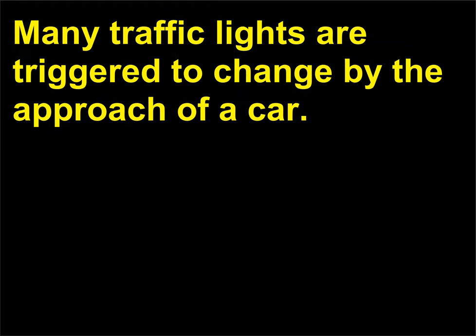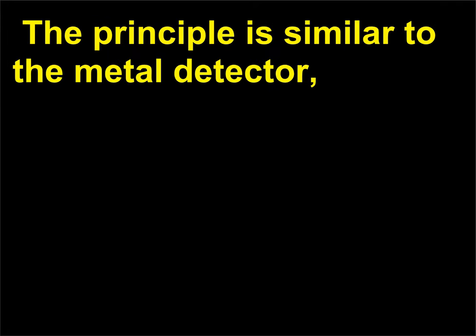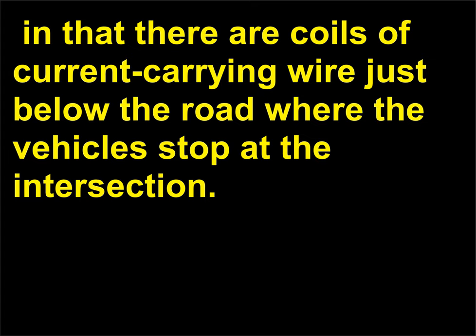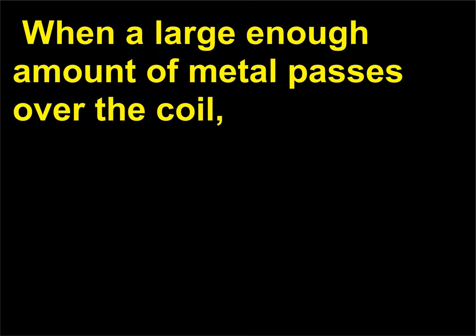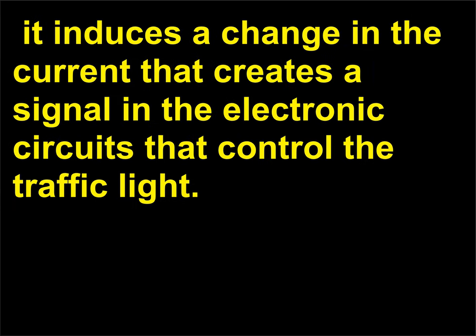Many traffic lights are triggered to change by the approach of a car. The principle is similar to the metal detector, in that there are coils of current-carrying wire just below the road where the vehicles stop at the intersection. When a large enough amount of metal passes over the coil, it induces a change in the current that creates a signal in the electronic circuits that control the traffic light.